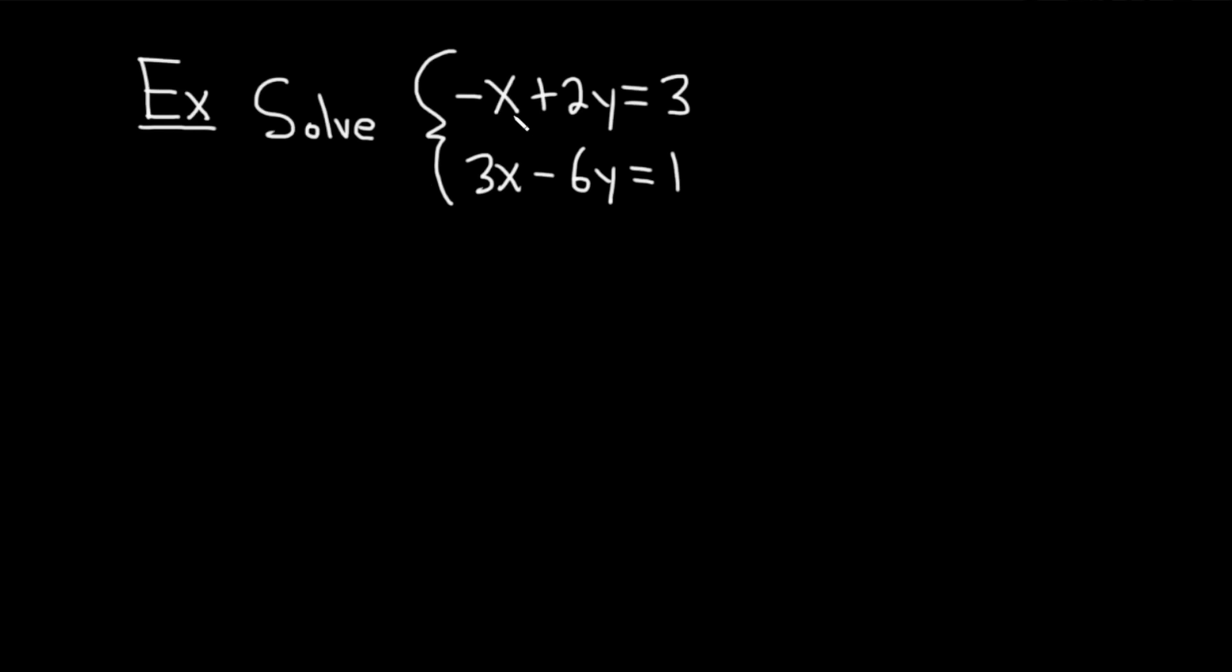Solve the system of equations negative x plus 2y equals 3, and also 3x minus 6y equals 1. Let's work through it. Solution. Let's try to use the elimination method. So basically, we'll take the first equation and multiply it by 3.